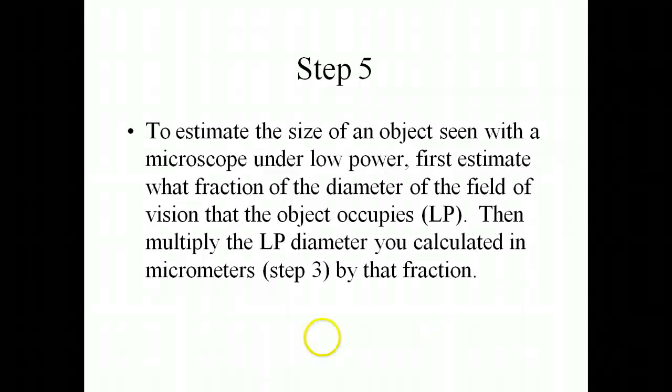Step 5, estimate the size of an object seen with a microscope under low power. First estimate what fraction of the diameter of the field it occupies. Then multiply the low power diameter you calculated in micrometers by that fraction. For instance, if we see something in our field of view, and it takes up one half of our field of view, we simply have to take one half times 1,200, which is the diameter of our field of view.